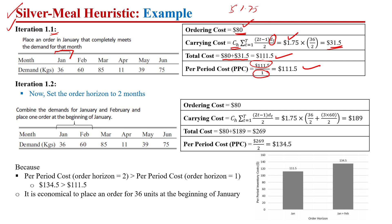Now let's calculate the total per period cost if we have a planning horizon of two — meaning at the start of January we place an order for January plus February's demand. The ordering cost is $80. The carrying cost using the same formula for a two-period horizon is $189. The total cost gives a per period cost of $134 when divided by two.